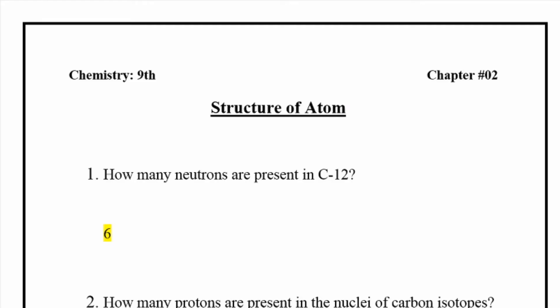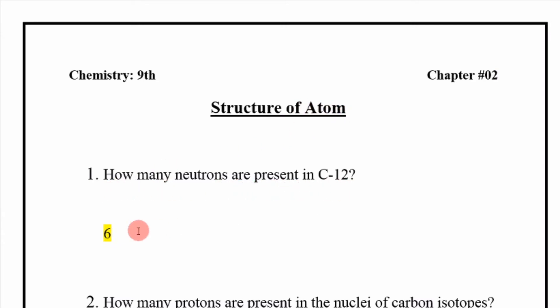Assalamu alaikum, hello friends and welcome to the next lecture of 9th class chemistry. Let's restart now — Chemistry 9th, Chapter Number 2: Structure of Atom. First question: how many neutrons are present in Carbon-12? The answer is 6.